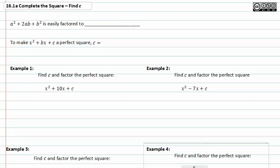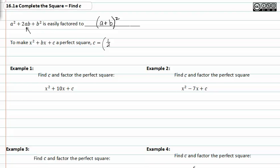If we look at a generic trinomial like a squared plus 2ab plus b squared, we know that it's easy to factor that to a plus b squared. You can always foil that out to verify. To take a trinomial like this and make it a perfect square, we have to figure out what c actually represents. If we want to make a perfect square given two terms but an unknown third term, we can find c by taking one-half, multiplying it by b, and squaring it.